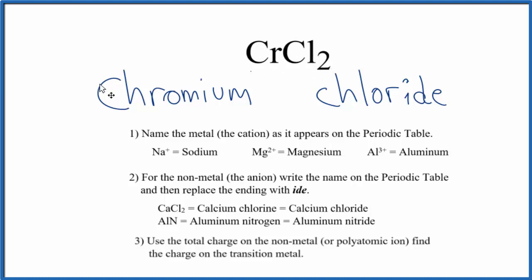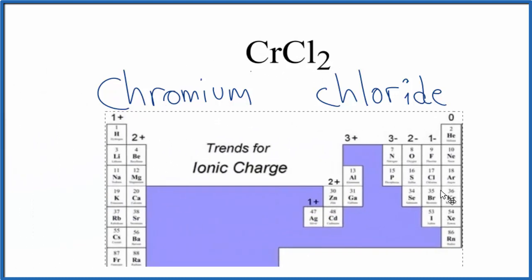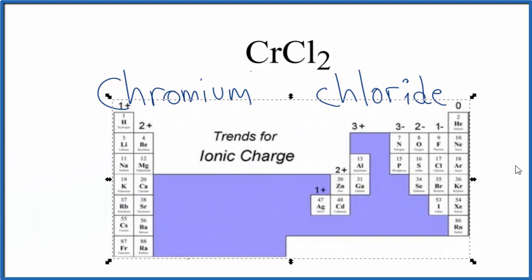Right here it's bonded to two chlorine atoms. So let's go to the periodic table. We can find the charge for chlorine. That's right here, and 1- is its ionic charge.